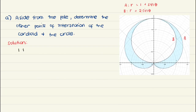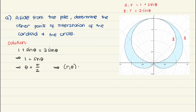We equate the two curves: 1 plus sine theta equals 2 sine theta. Transposing sine to one side, we get 1 equals sine theta. Solving for theta gives theta equals pi over 2. Since pi over 2 is not the pole, this is the intersection point we are looking for. Plugging pi over 2 back into either equation gives r equals 2, so the point is (2, pi over 2).